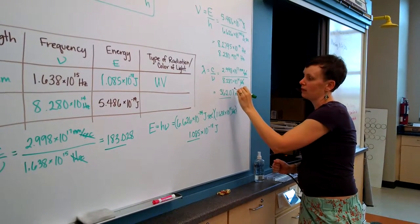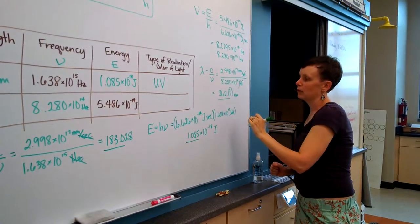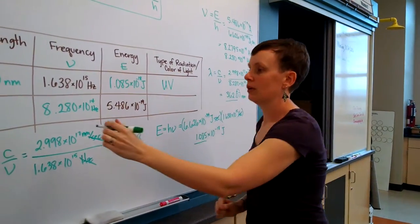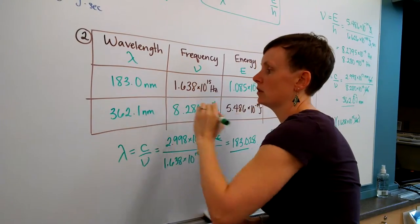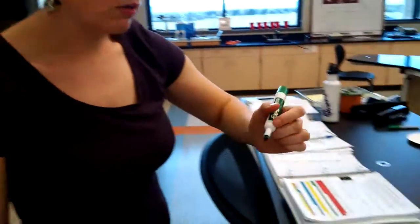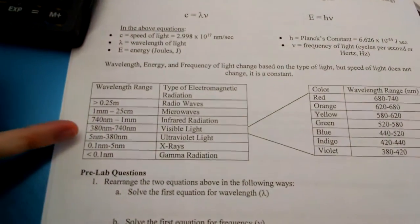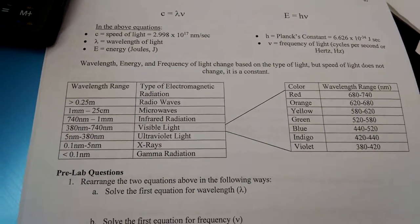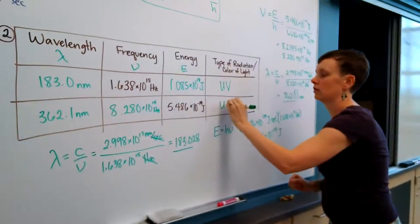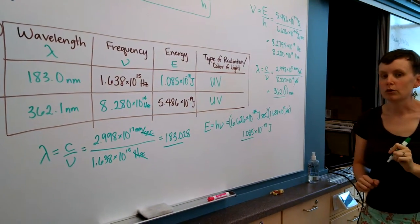Sig fig-wise, the 7 is going to round the 0 up, so when we record it over here it will be 362.1 nanometers. Then we look back to the front of the packet, 362.1 is also in our ultraviolet light range. And that's how you fill in this table.